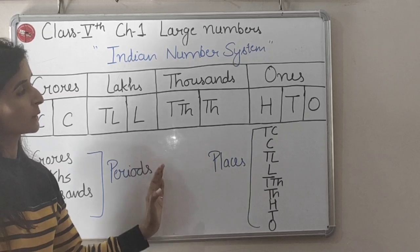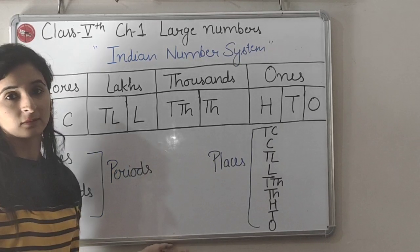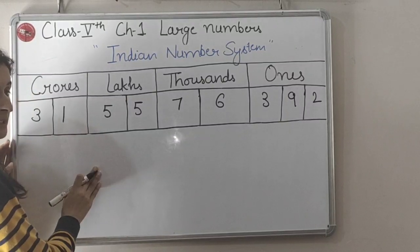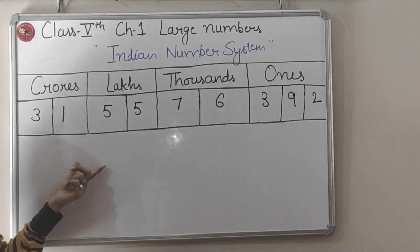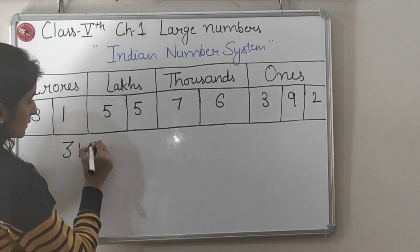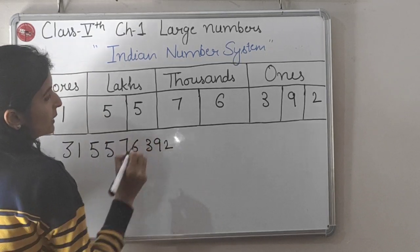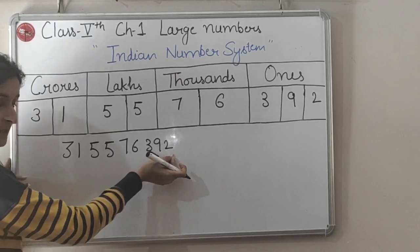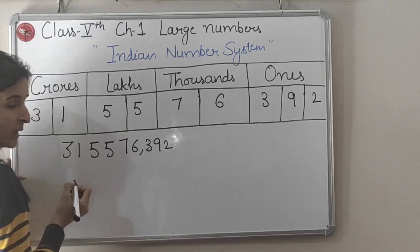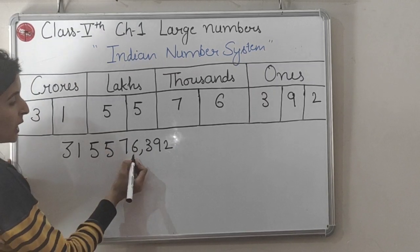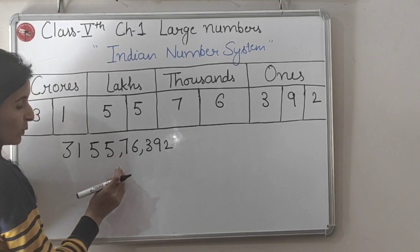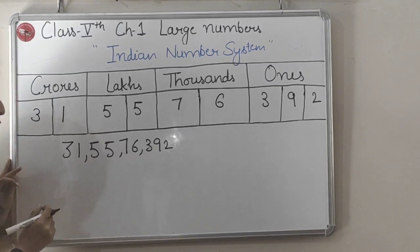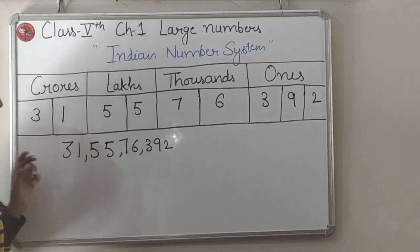This is what I wanted to tell you about the Indian Numbers System. Now we will take some examples. I have written a number in the Indian place value chart. First of all, I have to put commas in between. We will start from the right side. In the first period, there are three places, so leaving these three places, we put one comma. After that, all other periods have two places, so leaving two places each, we put the next commas. This is the method to put commas between digits in Indian Numbers System.